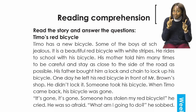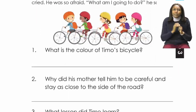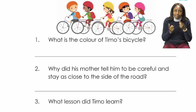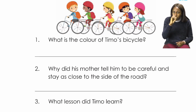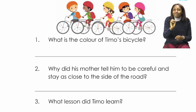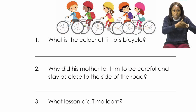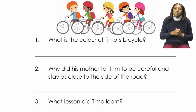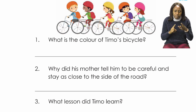Now let's take a look at our questions so that we can answer them. We will read each question twice. What is the colour of Timur's bicycle? Why did his mother tell him to be careful and stay as close to the side of the road as possible?